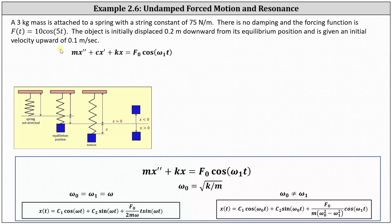To begin, a three kilogram mass is attached to a spring with a spring constant of 75 newtons per meter. There is no damping and the forcing function is F(t) = 10 cosine 5t. The object is initially displaced 0.2 meters downward from its equilibrium position and is given an initial velocity upward of 0.1 meters per second.